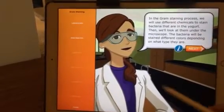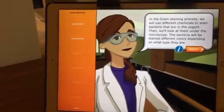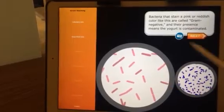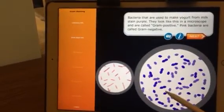Let's collect yogurt samples. In the gram staining process, we will use different chemicals. Bacteria that stain a pink or reddish color like this are called gram negative.